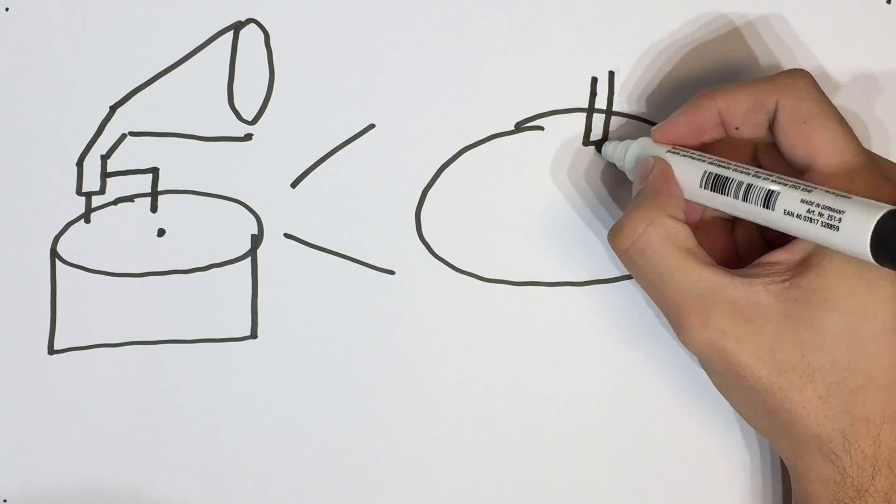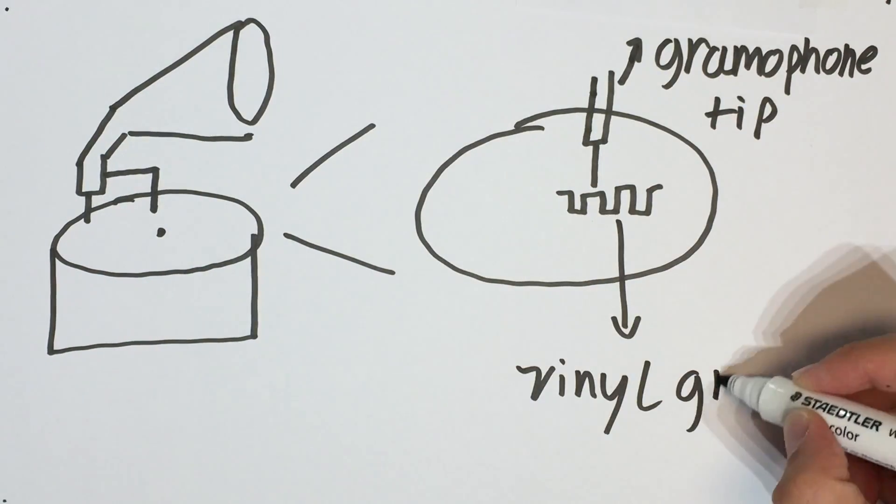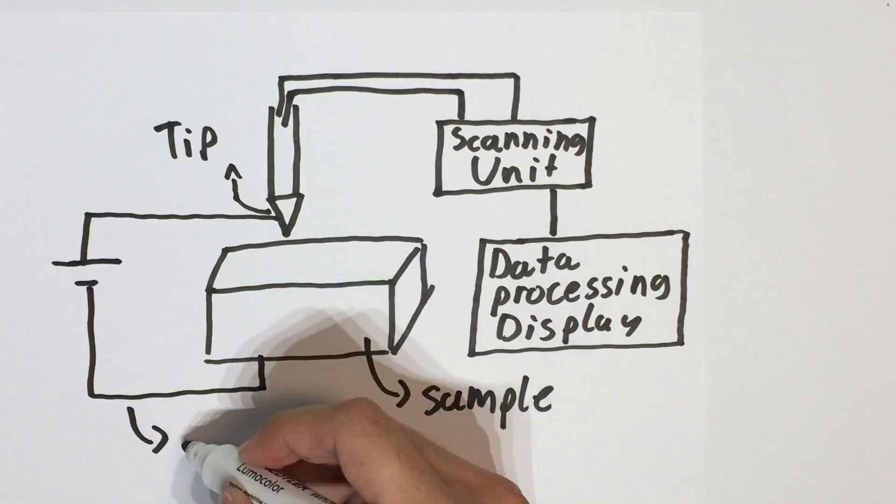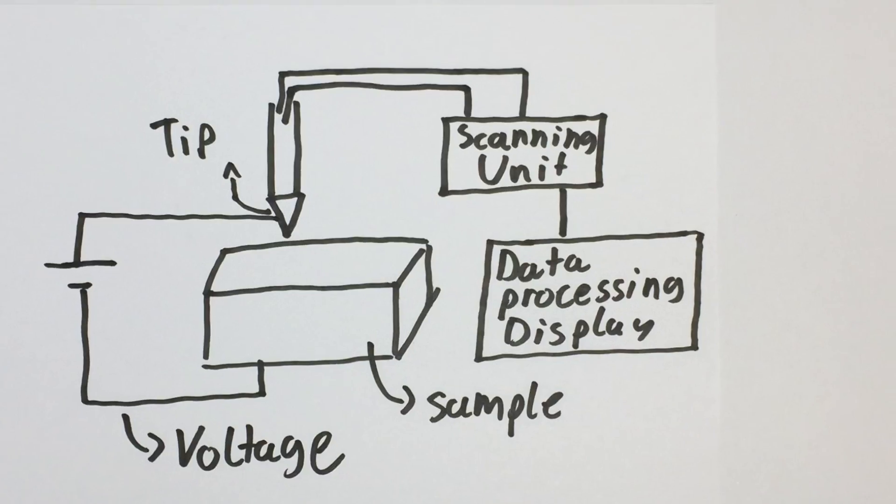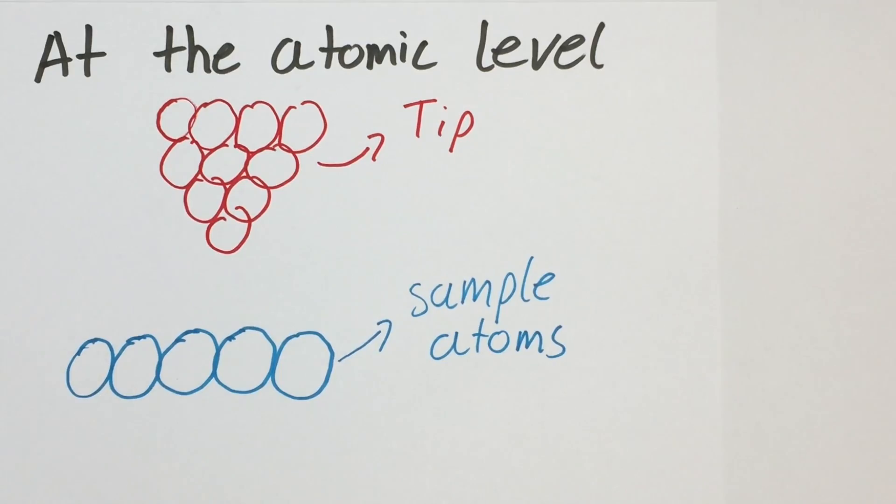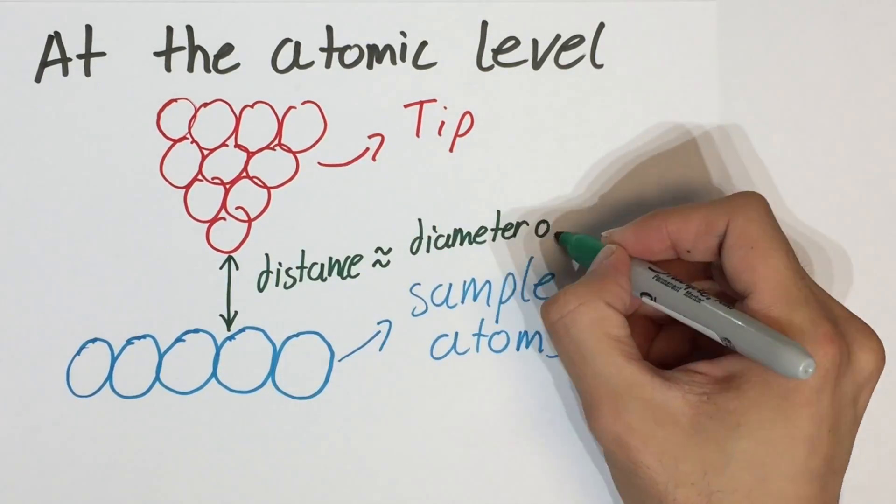It more or less works like a gramophone which uses its tip to read the grooves of the vinyl. A sample is placed in an environment where vibrations are minimized. Then, a probe with a very sharp tip is moved very close to the surface of the sample maintaining a separation almost equal to the diameter of a single atom.